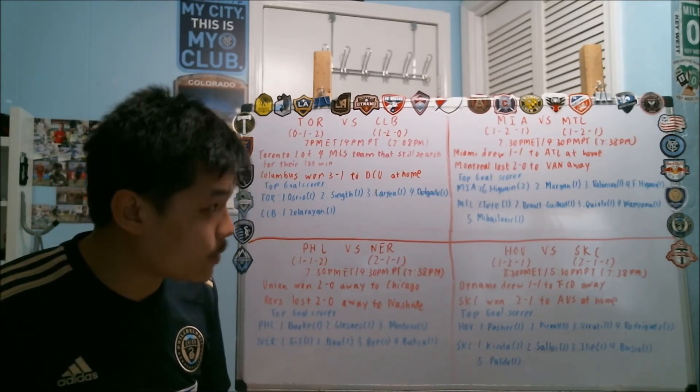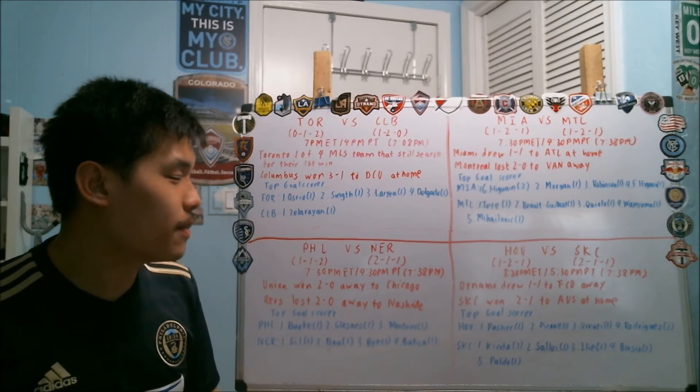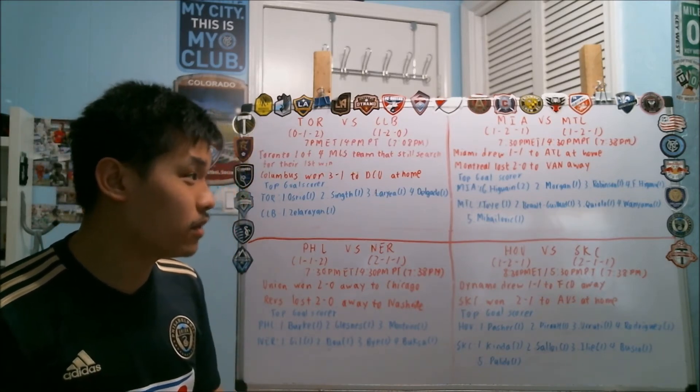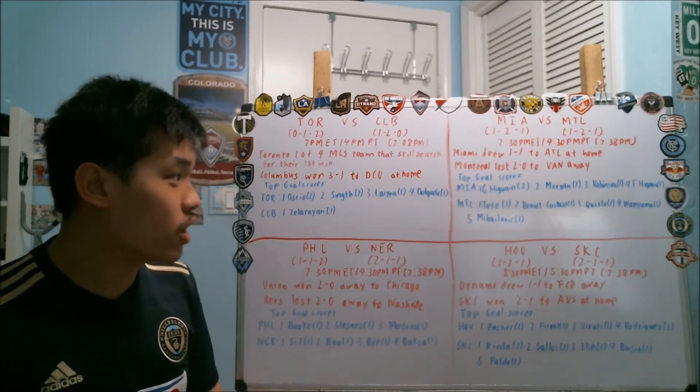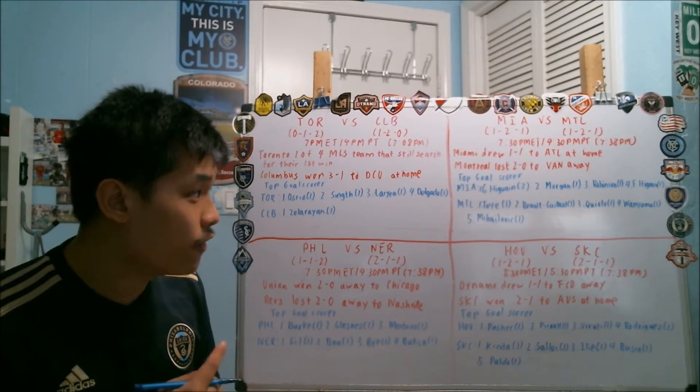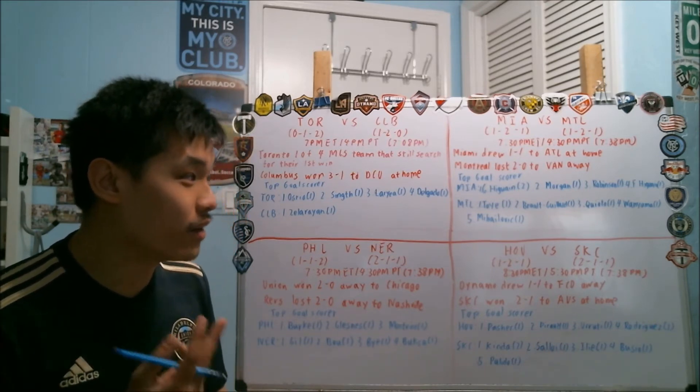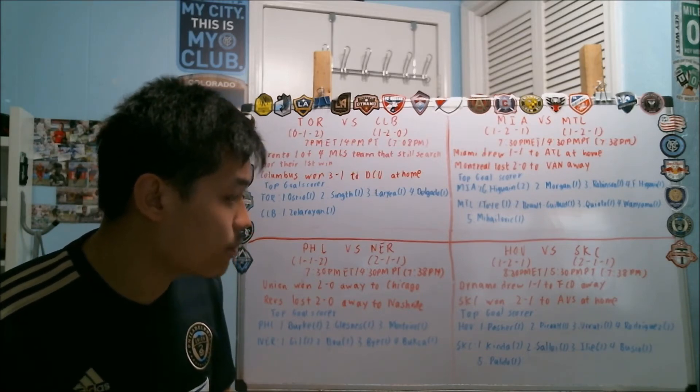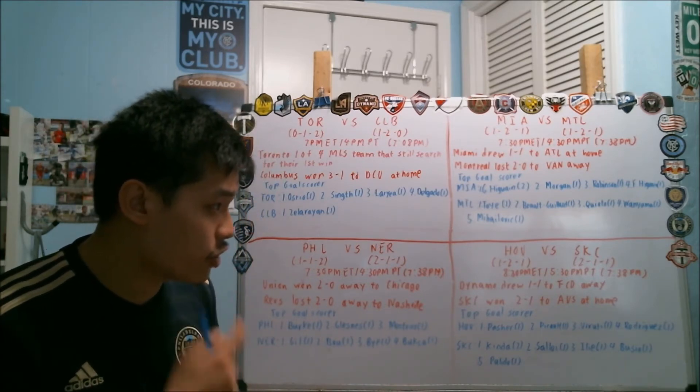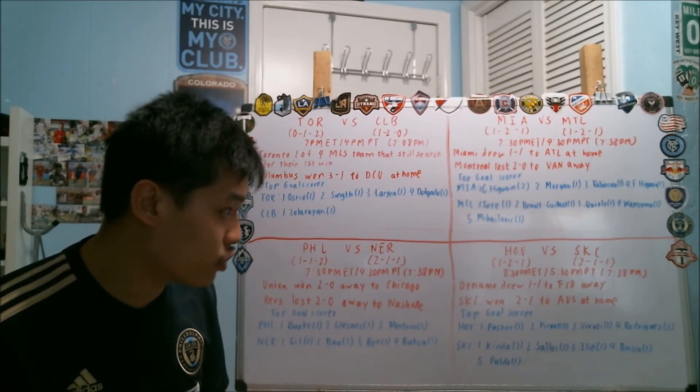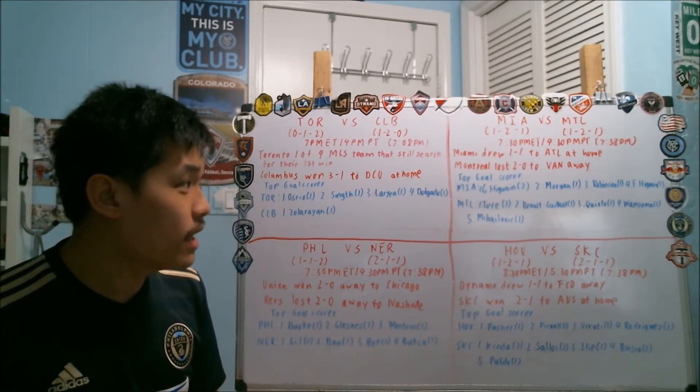Moving on to the next match, Inter Miami against Montreal. Both of these teams are coming into this game with a record of 1-2-1, as this game will start at 7:30 p.m. Eastern, 4:30 p.m. Pacific. For Miami, they drew 1-1 to Atlanta in their last home game. For Montreal, they suffered their first loss of the season by losing 2-0 to the Vancouver Whitecaps on the road.